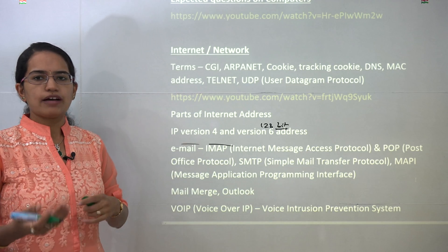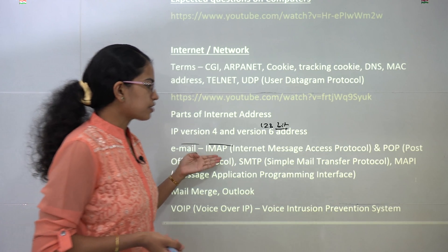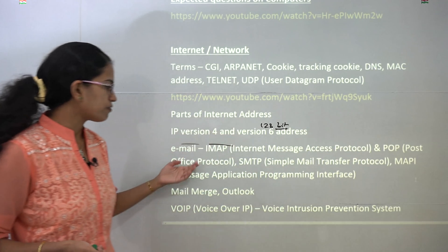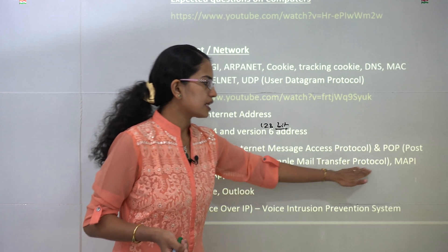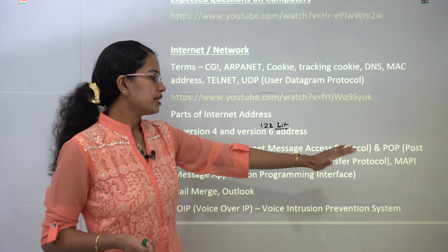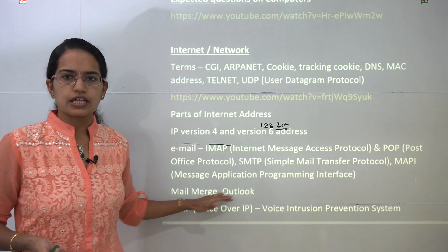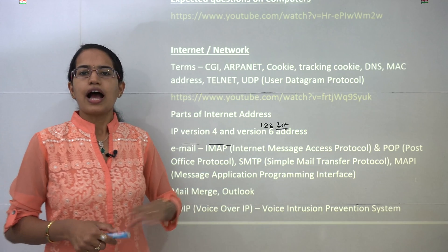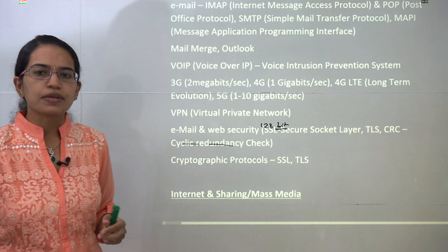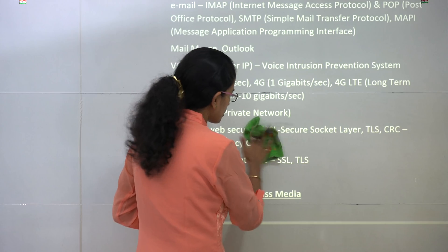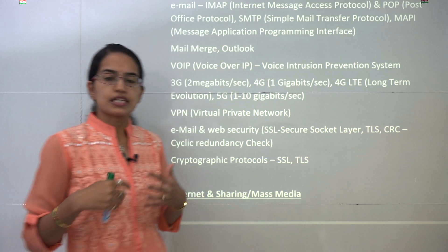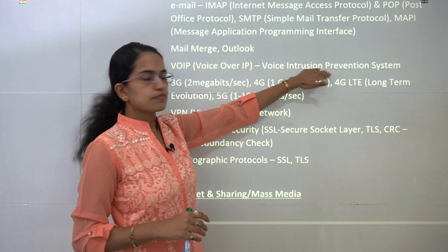Under email you have various protocols — sometimes there are direct questions on abbreviations. IMAP is Internet Message Access Protocol, POP is Post Office Protocol, SMTP is Simple Mail Transfer Protocol, and MAPI is Message Application Programming Interface. Mail merge was a question last time, so all parameters related to Outlook and its functionalities are again important. VOIP — Voice over IP — is very important; WhatsApp calls and Google Hangouts are examples of VOIP. If there is any attack, you use the Voice Intrusion Prevention System.